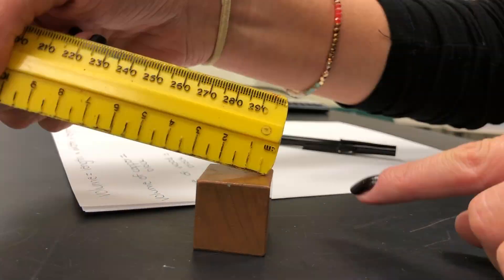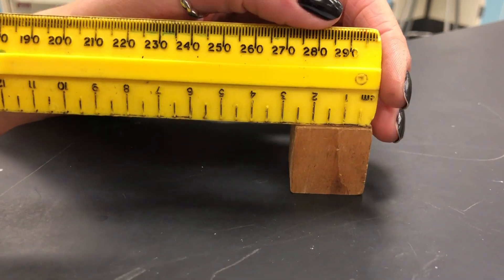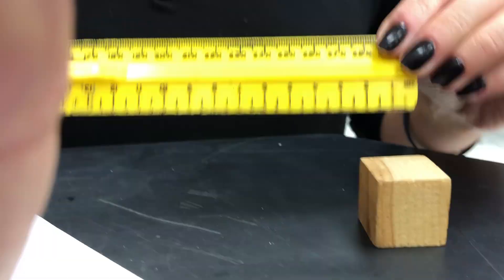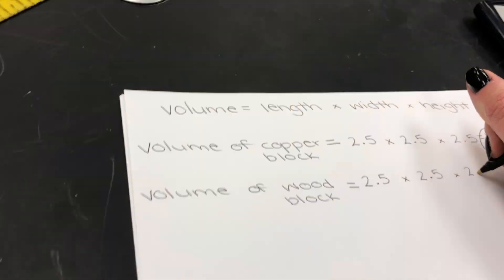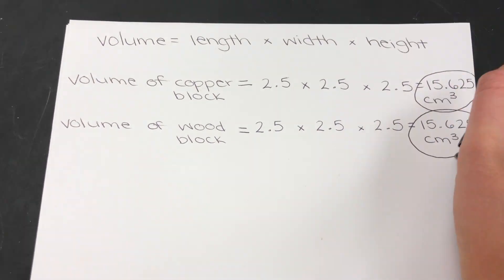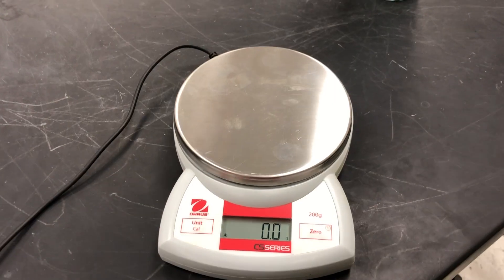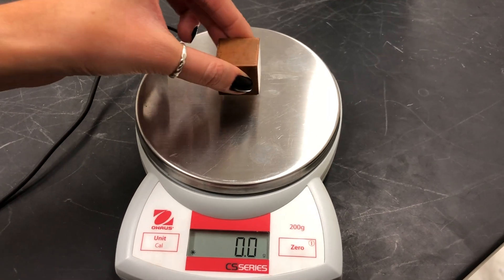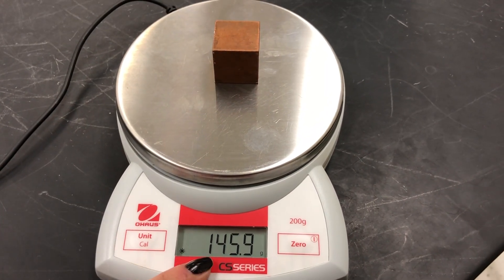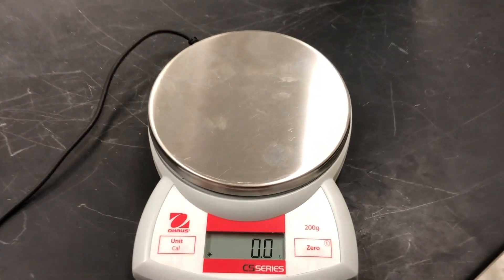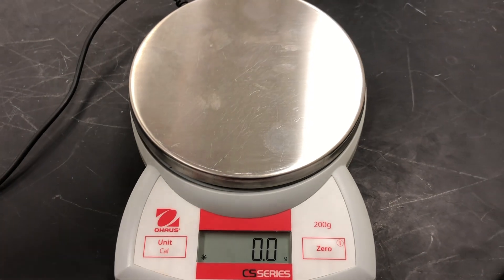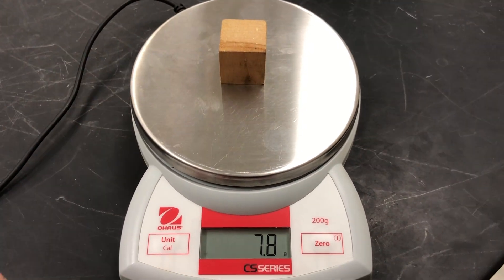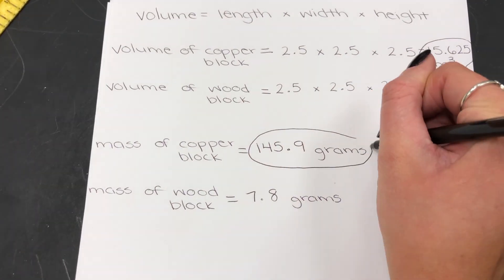This copper block and this wood block both have the same volume — they're both taking up the same amount of space. But when measuring their masses, we see that the copper block has a much greater mass than the wood block. There are more atoms packed into this copper block than the wood, so we can say that this copper block is more dense than the wood block.